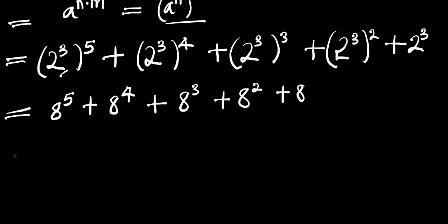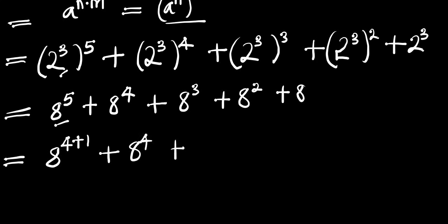Then the next thing we are going to do is — instead of 8 to the power of 5, we can write it as 8 to the power of 4 plus 1, plus 8 to the power of 4. We do the same thing here: we have 8 to the power of 2 plus 1, plus 8 to the power of 2, and plus 8.